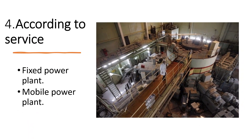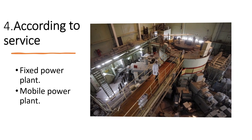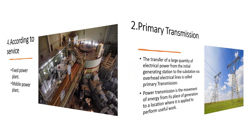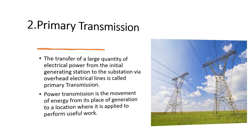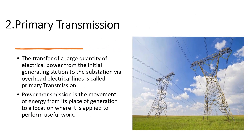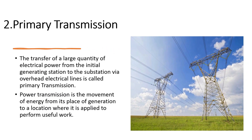According to service, there are fixed power plant and mobile power plant. The transfer of a large quantity of electrical power from the initial generating station to the substation via overhead electrical lines is called primary transmission.